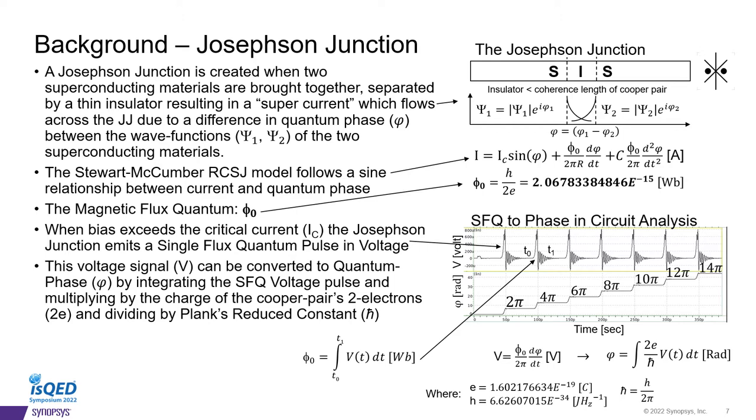We can describe this current using the Stewart-McCumber RCSJ model, which expresses the sinusoidal relationship between quantum phase and the current. A key physical constant found in this description is the magnetic flux quantum, or Φ₀. This is the unit quantified by taking Planck's constant and dividing it by the charge of the two electrons found in our Cooper pair.